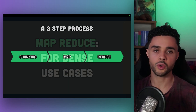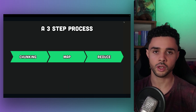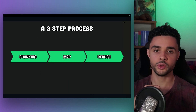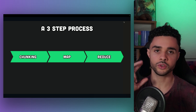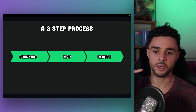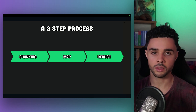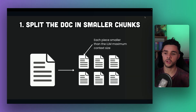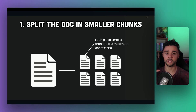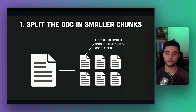The MapReduce method we are about to explore is particularly well suited for dense information scenarios. Let's say we want to summarize the document. Using MapReduce, it involves three steps: chunking, mapping, and reducing. We start by splitting the document into smaller chunks, each processable by the LLM, so the size of each chunk should be smaller than the context size limit.